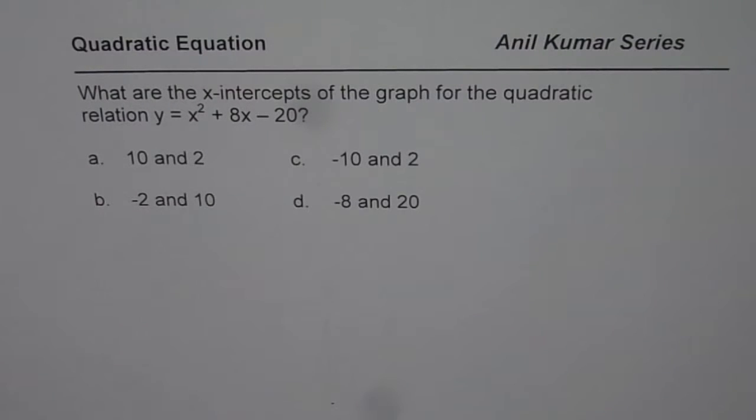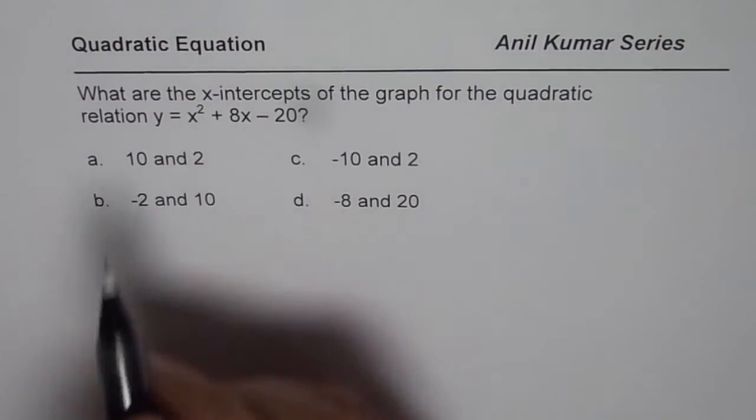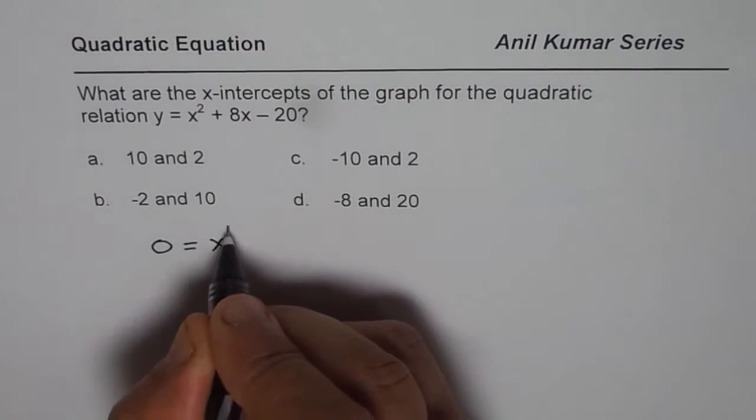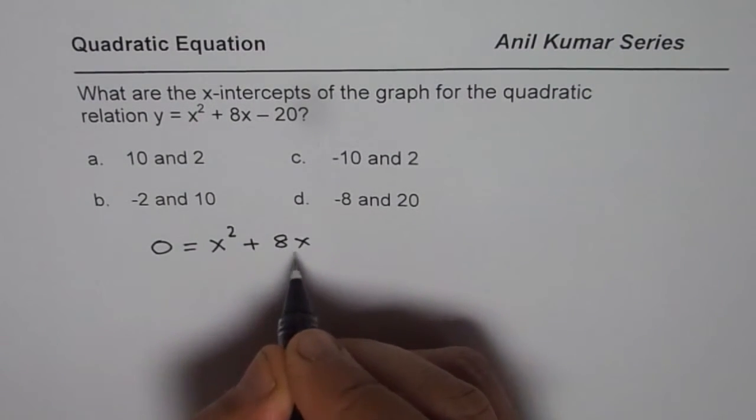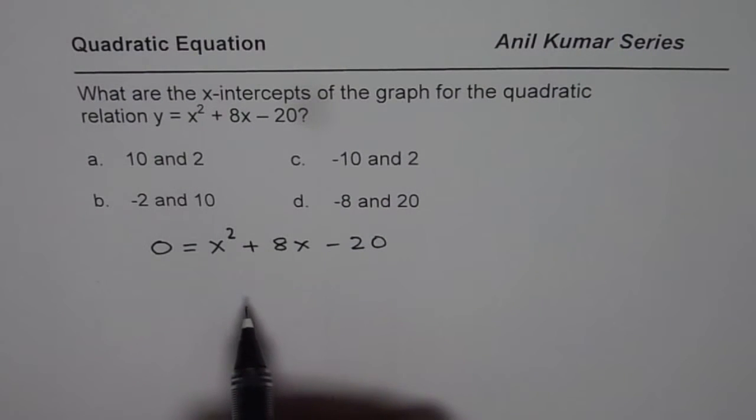Let us see how to solve this question. When we say x-intercepts, then y value is 0. So we could write this equation as 0 = x² + 8x - 20. Now, one way to solve this is factoring.